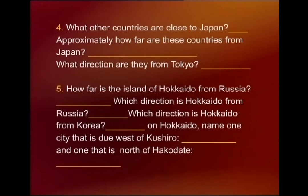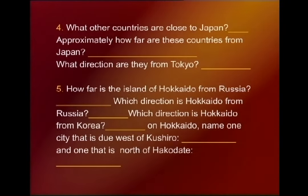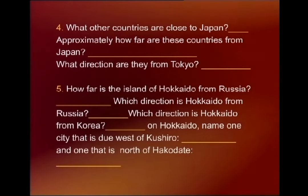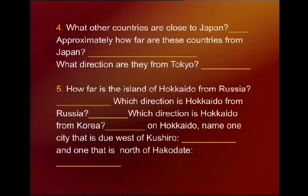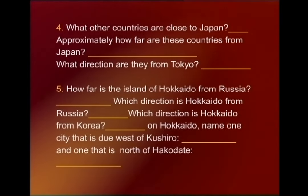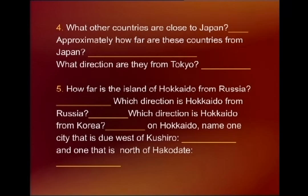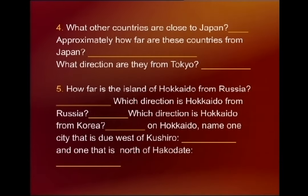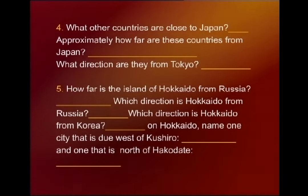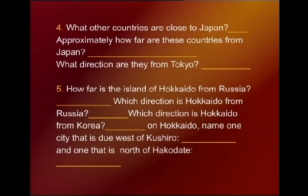Number four: What other countries are close to Japan? North Korea. Approximately how far are these countries from Japan? The closest is North Korea, which is 400 kilometers. What directions are they from Tokyo? They are in the west. How far is the island of Hokkaido? Work out which direction Hokkaido is from Korea.